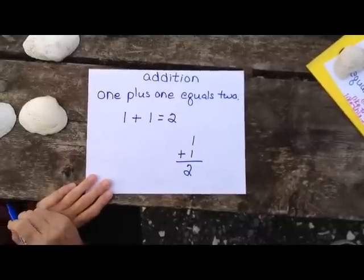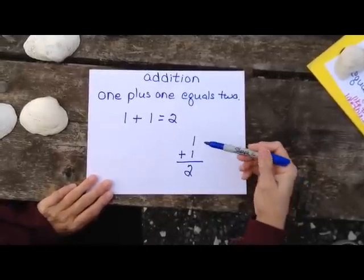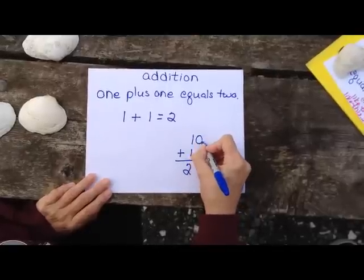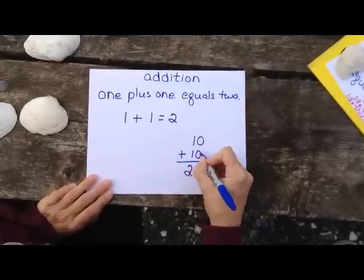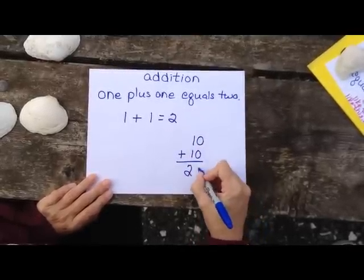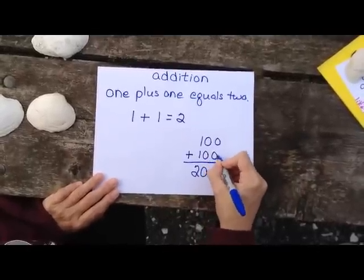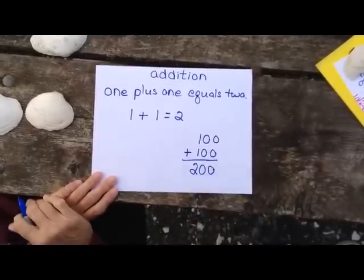I use the same language whether I'm writing single digits, reading single digits, or multiple digits. For example, ten plus ten equals twenty. One hundred plus one hundred equals two hundred.